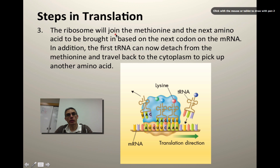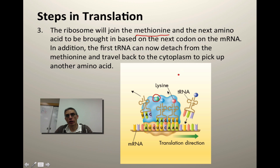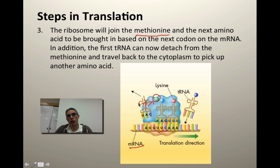Step number three is going to be using that ribosome to join the methionine — which was brought in by that first transfer RNA — to the next amino acid in the sequence. That next amino acid is going to be coded for by the next codon on the messenger RNA, with the anticodon found on the transfer RNA. There's going to be a bond that forms between these two amino acids. Once that bond forms, that very first transfer RNA that brought in the methionine is going to leave because it's no longer needed. It's going to travel back into the cytoplasm and pick up another methionine to use in building future proteins.